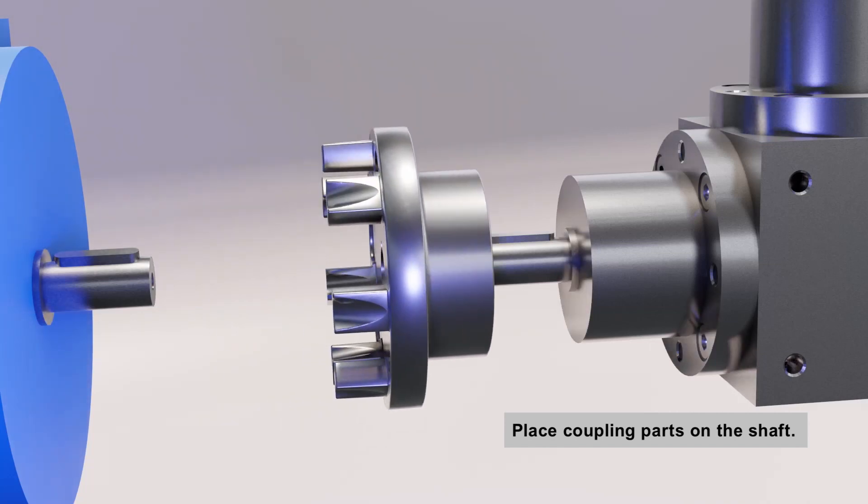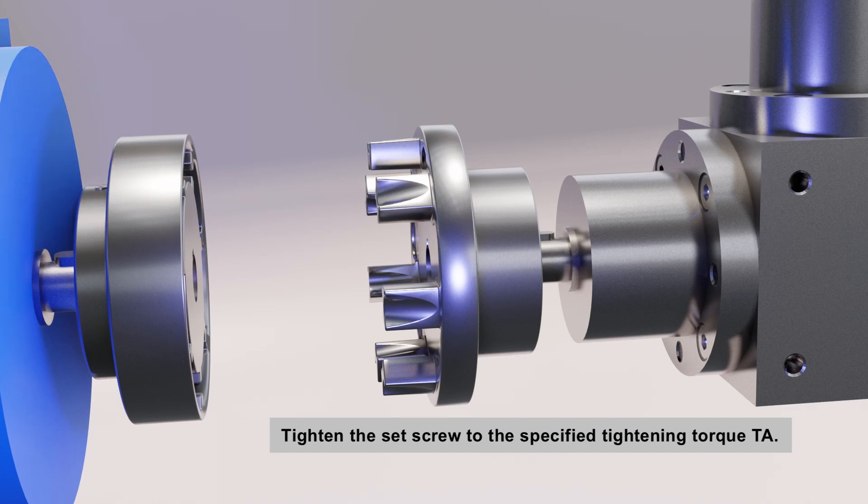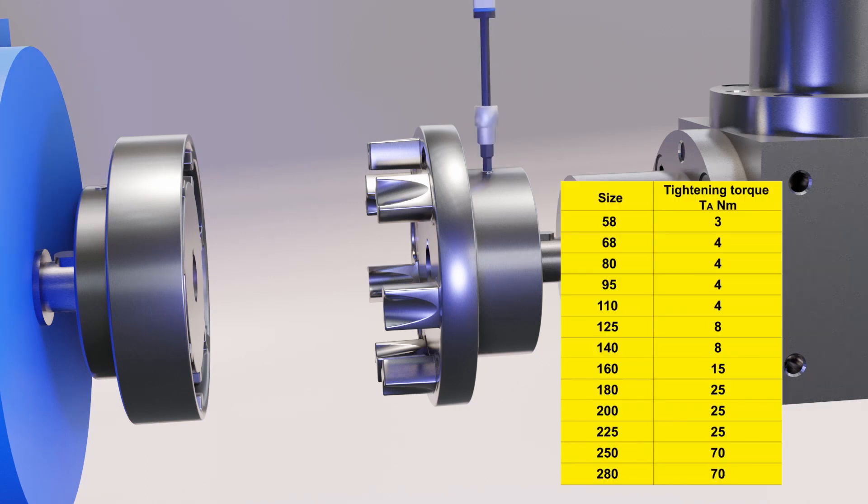Place the coupling parts on the shaft. Tighten the set screw or the screw for securing the end plate. Please make sure that you observe the specified tightening torque according to the table shown.